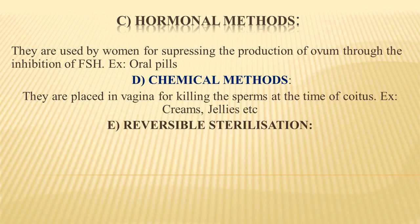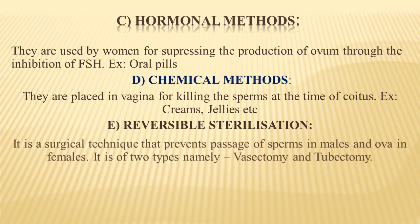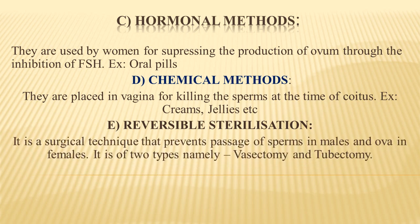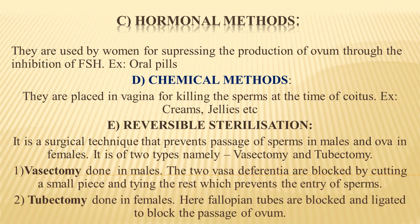Reversible sterilization is a surgical technique that includes two types: vasectomy and tubectomy. Vasectomy is performed in males — the vas deferens is blocked by cutting a small piece and tying the rest, preventing the passage of sperms. Tubectomy is performed in females — the fallopian tube is blocked and ligated, preventing the passage of ova. Both are referred to as surgical techniques.